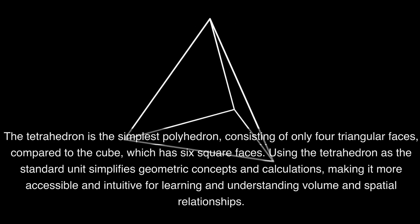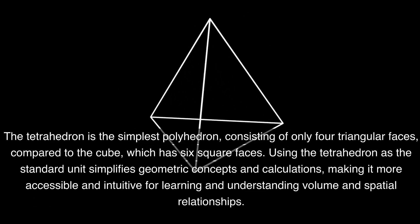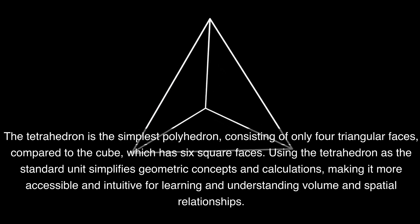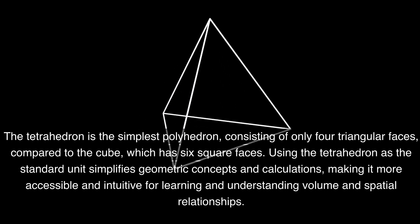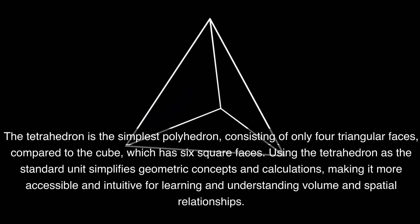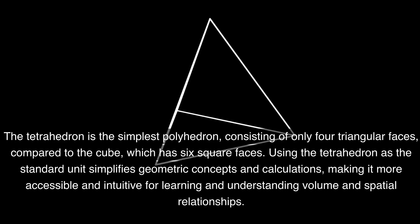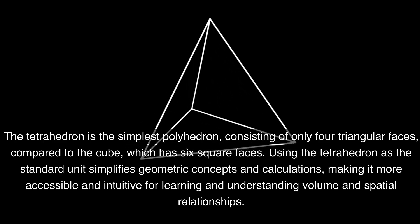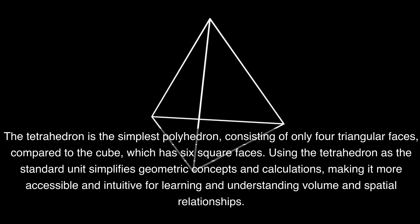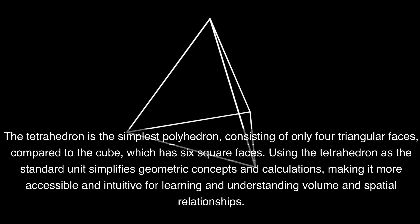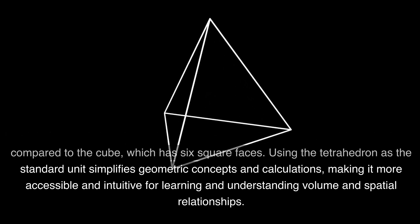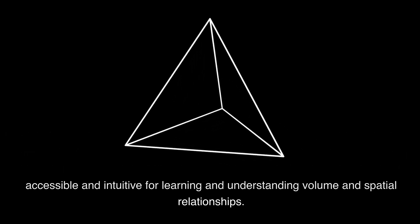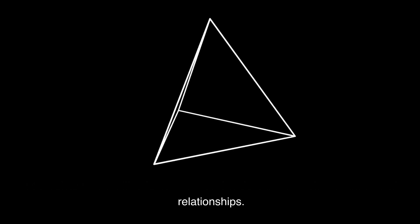The tetrahedron is the simplest polyhedron, consisting of only four triangular faces compared to the cube, which has six square faces. Using the tetrahedron as the standard unit simplifies geometric concepts and calculations, making it more accessible and intuitive for learning and understanding volume and spatial relationships.